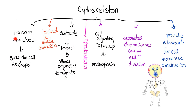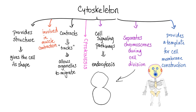Your cytoskeleton provides a structure which gives the cell its shape. It contracts, which will help in muscle contraction, and they will form tracks or bridges to allow organelles to move. They will help in cytokinesis, help in cell signaling pathways such as endocytosis. They will segregate chromosomes during the process of cell division. They will provide a template for cell membrane construction. When two cells are about to divide, the chromosomes will be held here and here, segregated through the mitotic spindle, which is part of the cytoskeleton.